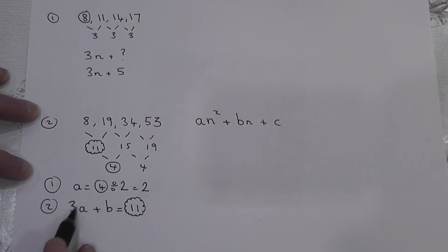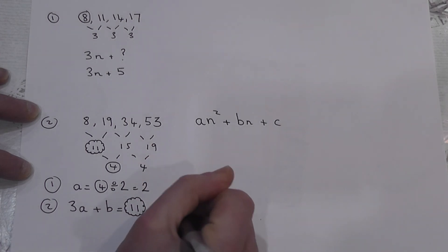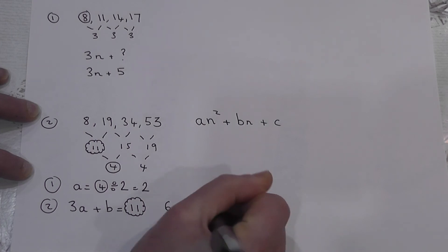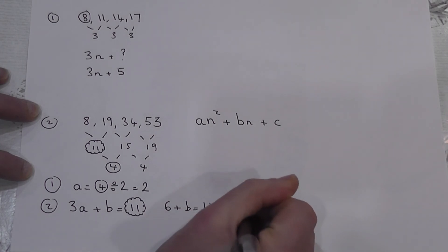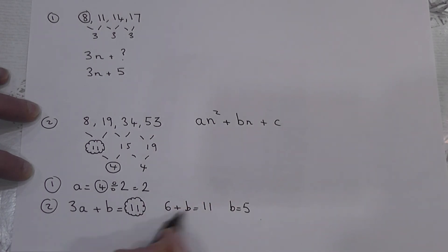So it's always 3 times this number. 3 times 2 is 6. b is unknown, but the answer has got to be 11. So b has got to equal 5, because 6 plus 5 is 11.